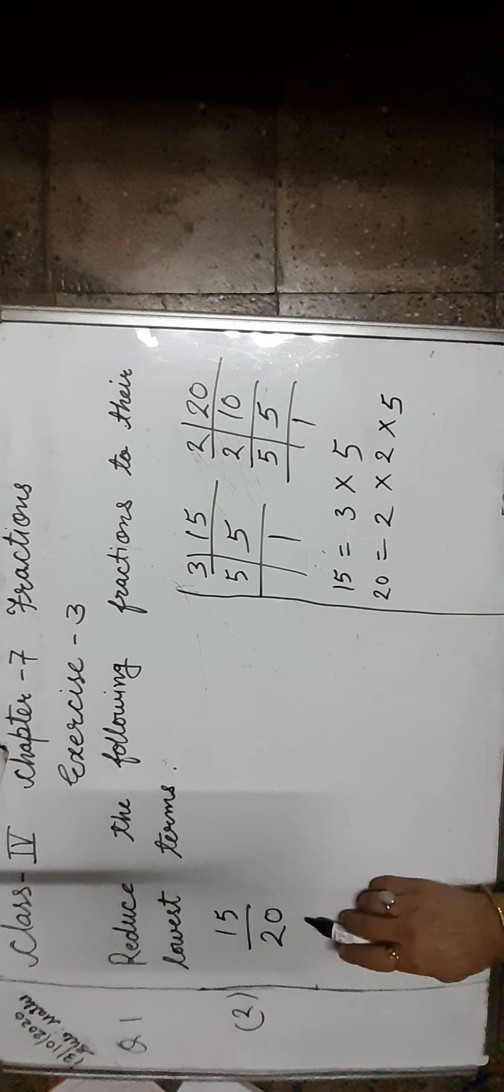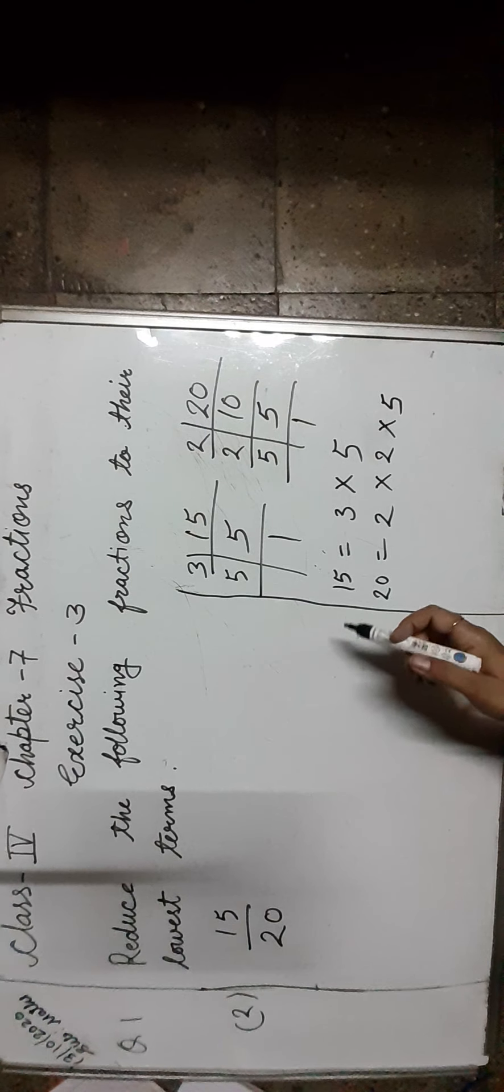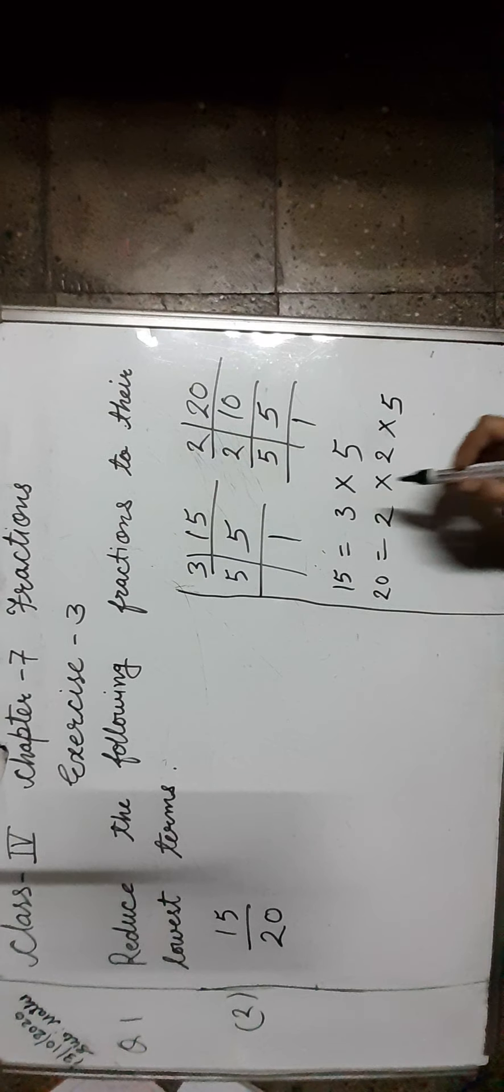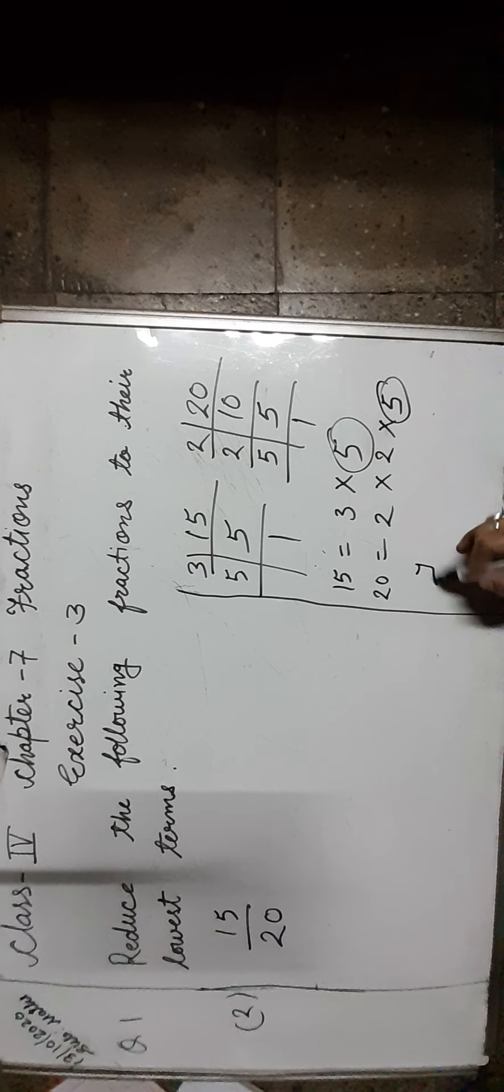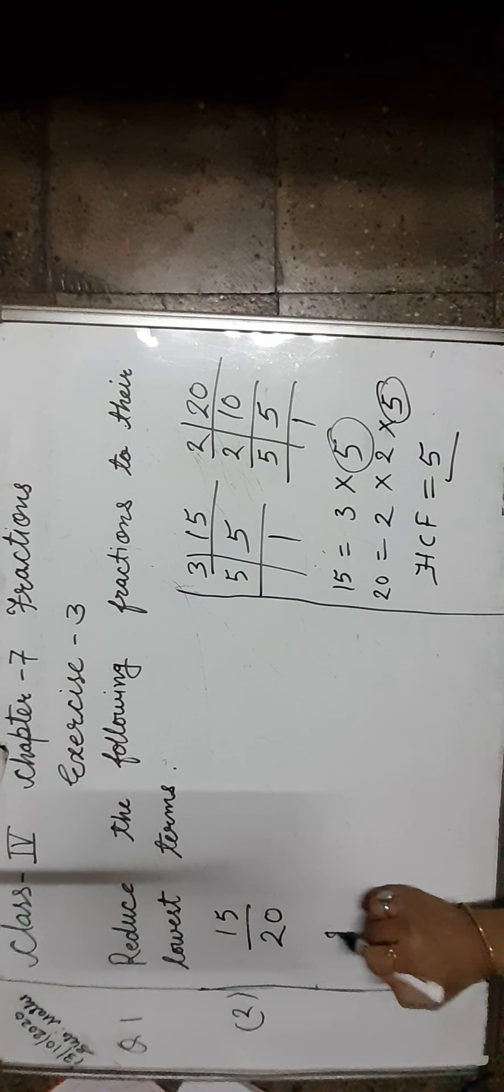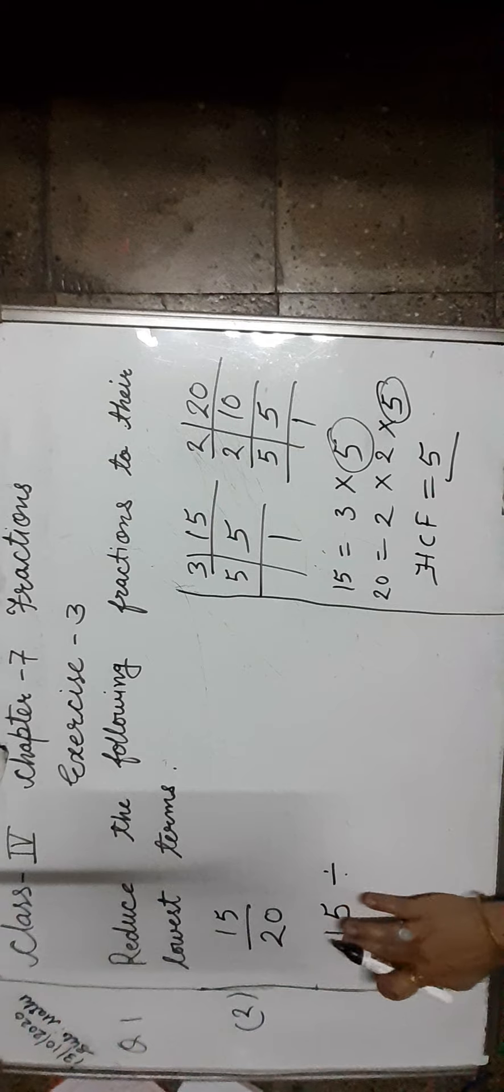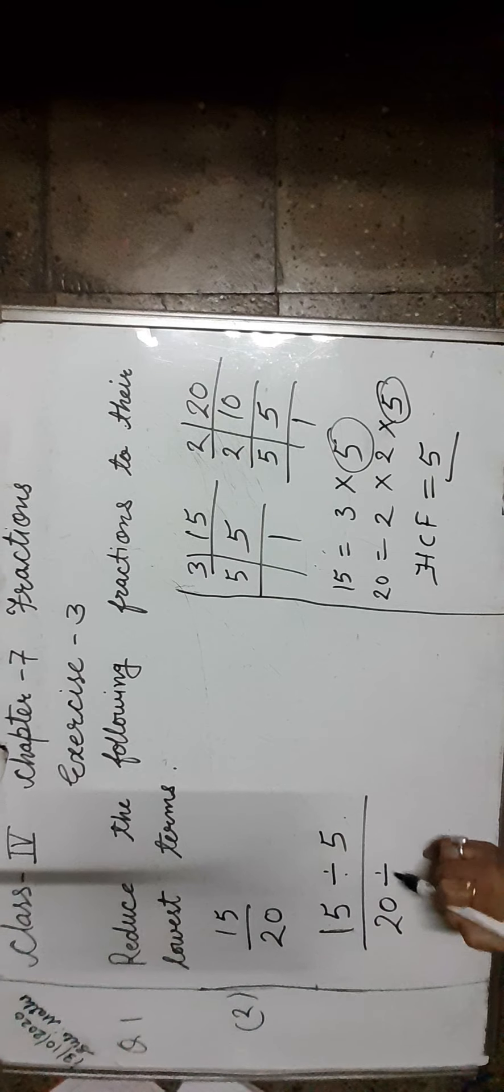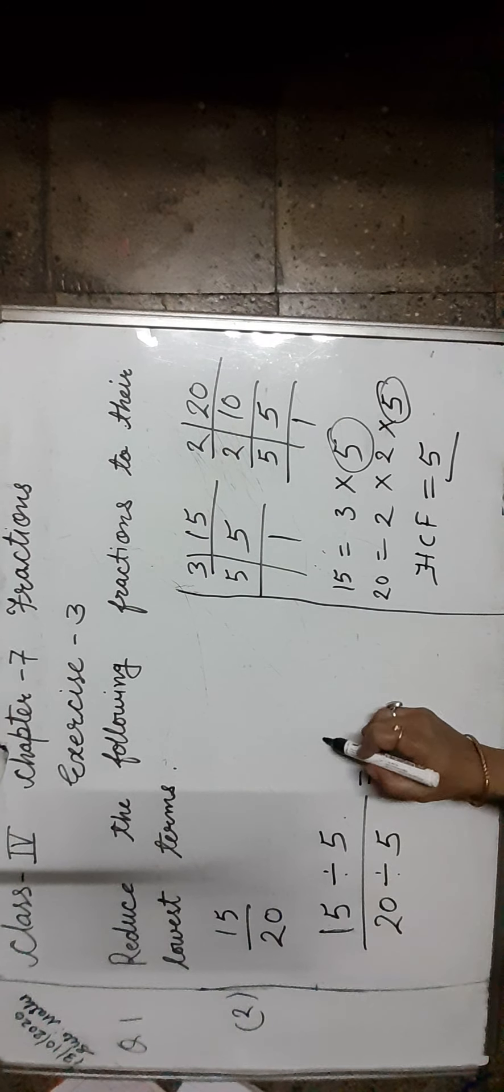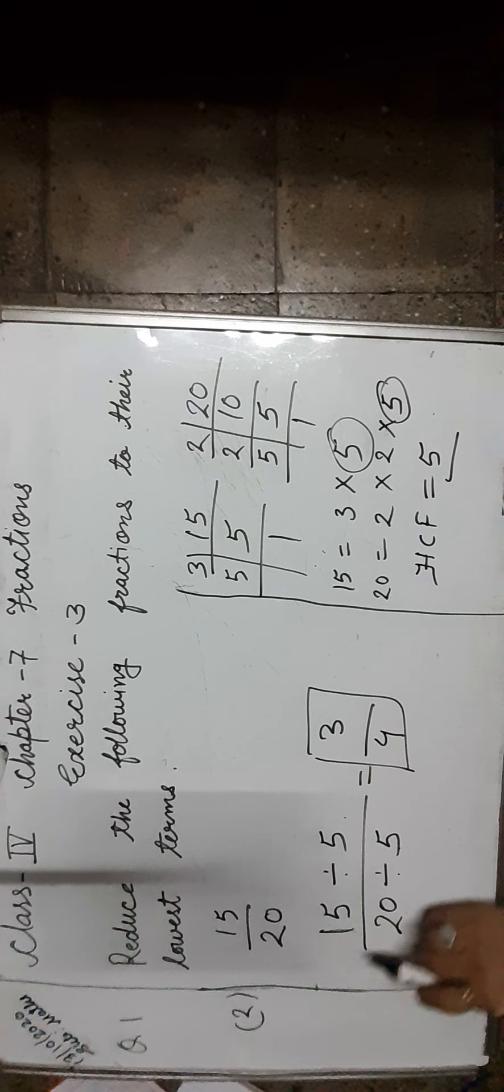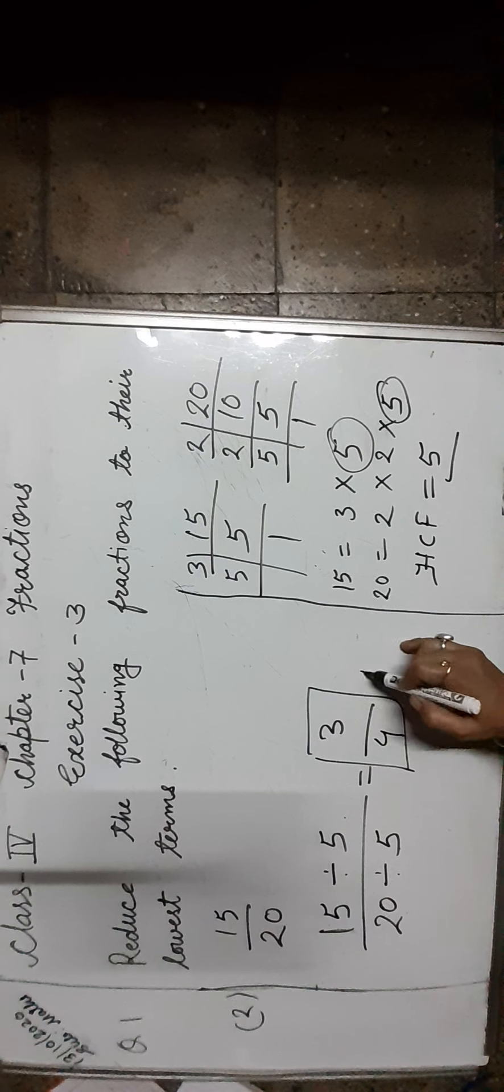Now, question number 2: 15 upon 20. First we find the HCF of 15 and 20. The HCF of 15 and 20 is 5. Let us divide both 15 and 20 by 5. 15 divided by 5 upon 20 divided by 5. 5 times 3 is 15, 5 times 4 is 20. So the lowest form of 15 upon 20 is 3 upon 4.